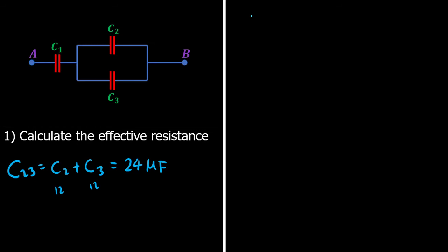And then C1 and C2-3 are in series, so we know that the effective capacitance is going to be—wait for it—we're going to have 1 over C1 plus 1 over C2-3, and then inverse that.